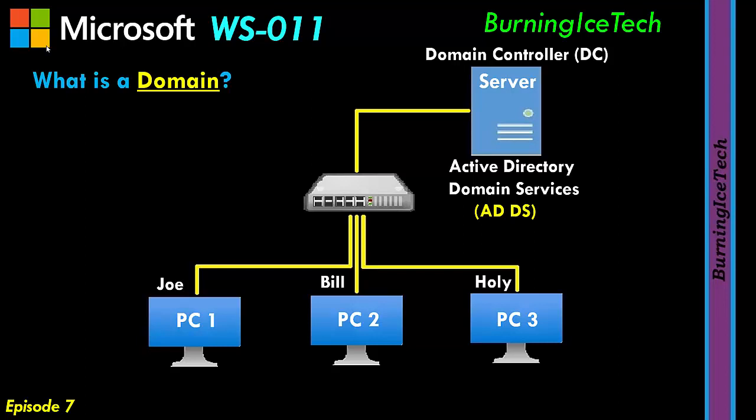To give an example, let's use Joe again at the bottom left. Previously, when Joe tried to log on in a workgroup environment, he would click on his account and provide his password. Similarly now, he's still going to log on as Joe — except now Joe is actually going to type in his username, being Joe, and type in his password, being 123. In a workgroup situation he also had to type in the password, but he didn't have to type in the username — he just needed to click on the account. Now he actually has to type in his respective username.